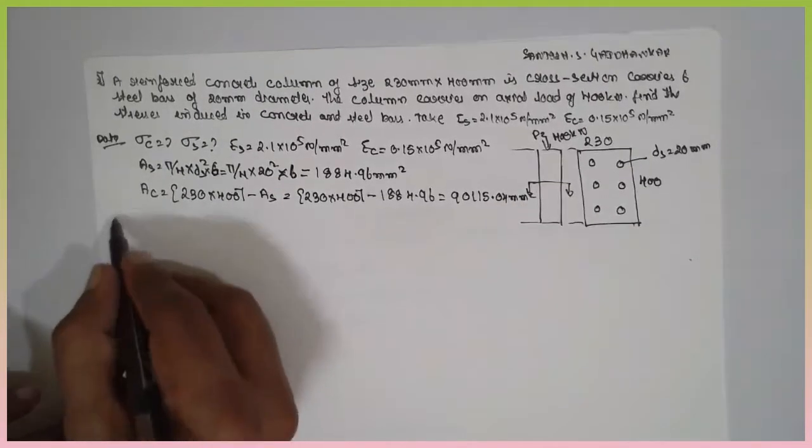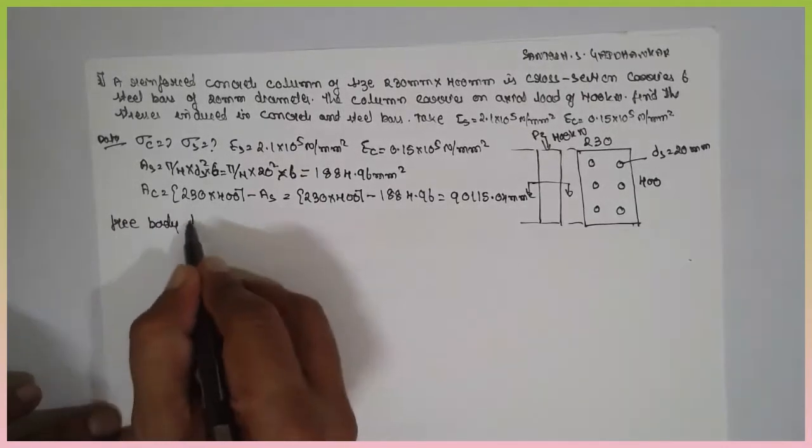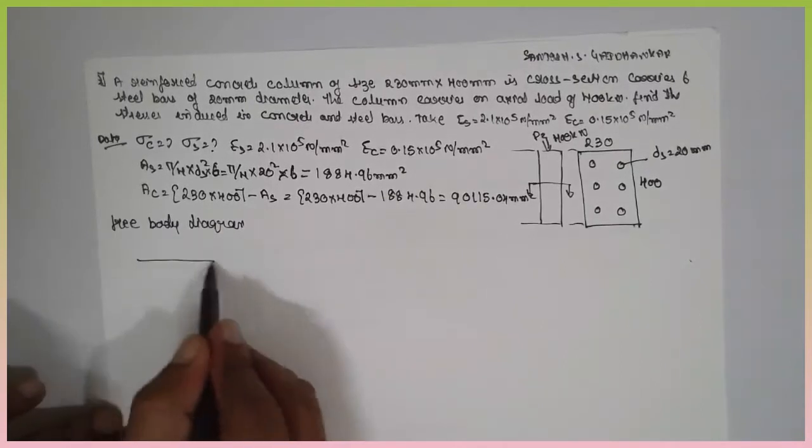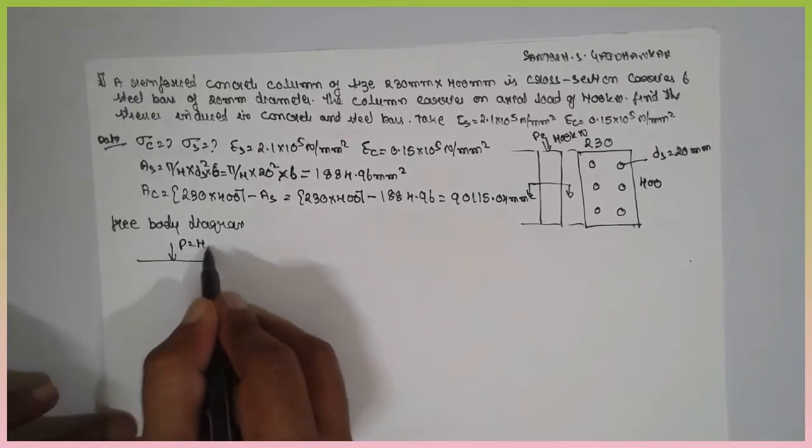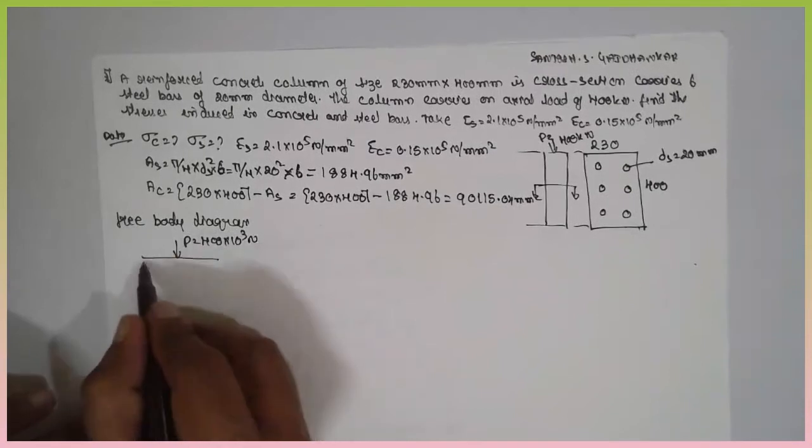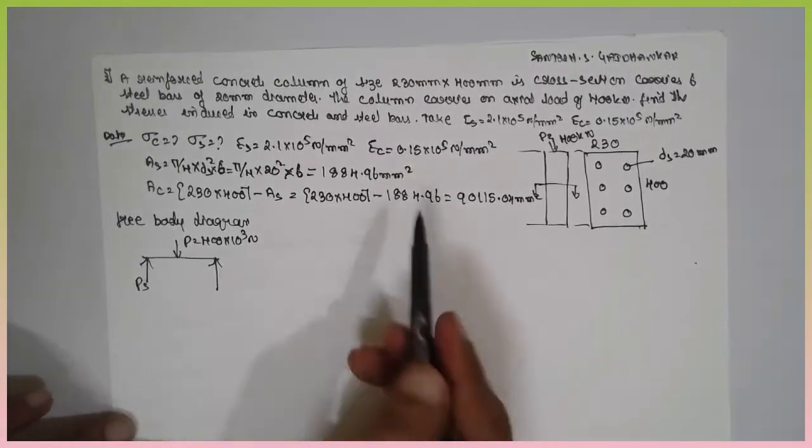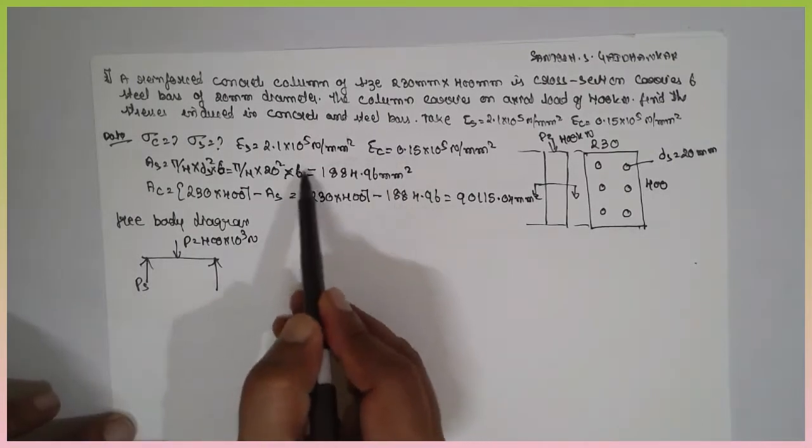Now, free body diagram. As the load is applied from the top 400 into 10 raise to 3 newton, the concrete and steel will react upward.